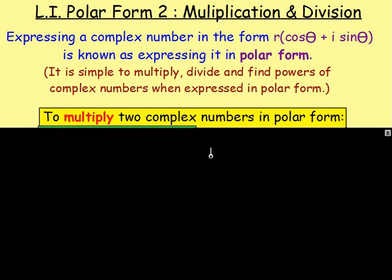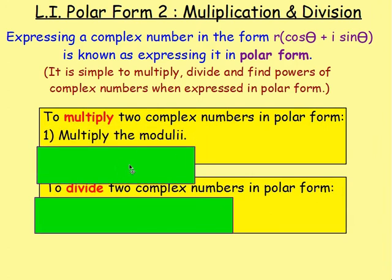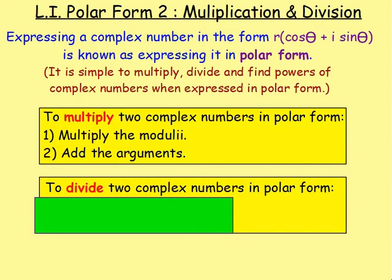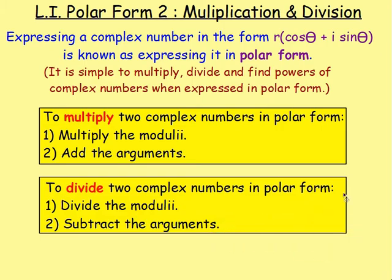To multiply complex numbers together when they're in polar form, all we have to do is multiply the moduli together, and with the arguments we would add them. To divide complex numbers when they're in polar form, all we do with the moduli is divide them, and with the arguments when we're dividing, we would subtract the arguments.